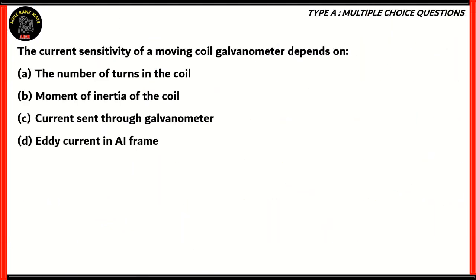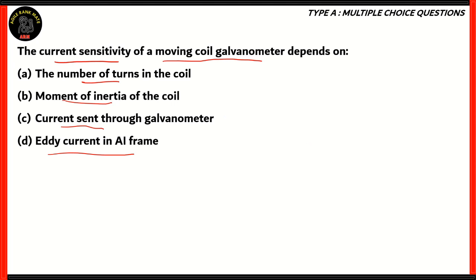Now let's look at the final question for today. The current sensitivity of a moving coil galvanometer depends on: number of turns, moment of inertia, current sent through the galvanometer, or eddy current in the frame. To solve this question, we need to find out the principle on which the moving coil galvanometer works.